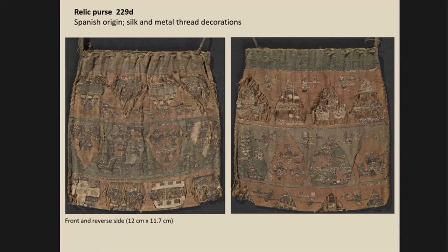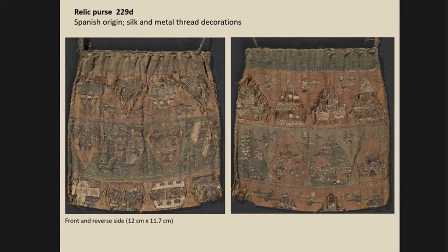I'm going to discuss one purse in more detail and then two others very briefly. The first is one of the most important ones — a small purse of 12 by 12 centimeters, made of silk with metal plot decorations. It has heraldic motives and stylistic animal motives, and the repetitive decorative pattern refers to a Spanish origin according to the catalog. It is also clearly showing Islamic influences which support that.